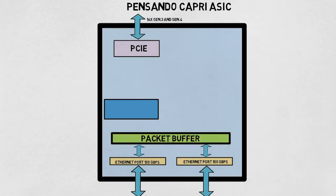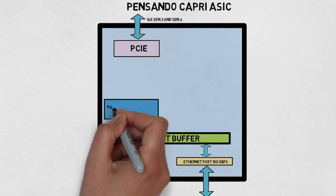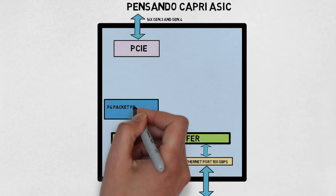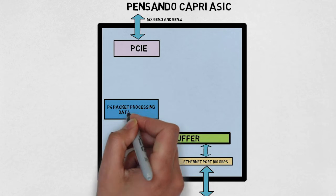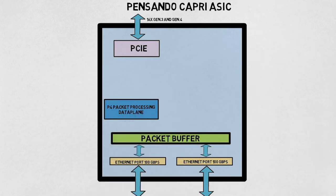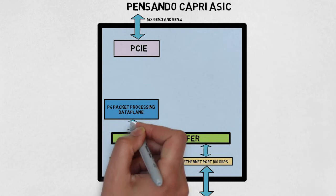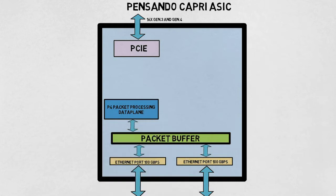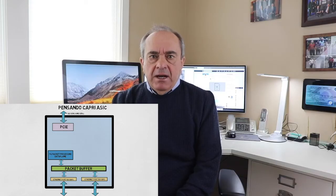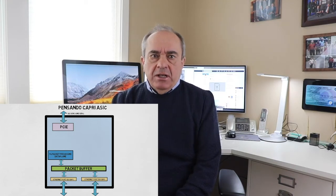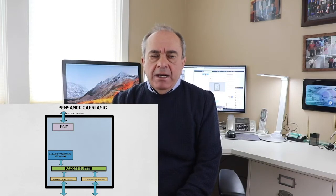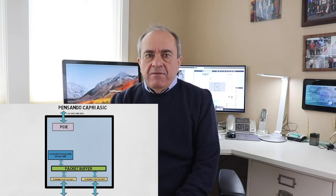The primary data plane processing feature of the Capri ESIC is the P4 packet processing data plane. The P4 data plane is composed of a pipeline of processors that are fully programmable using the P4 standard. This architecture guarantees that the ASIC is capable of processing 100 Gigabit per second of data plane traffic, while at the same time implementing a lot of functions like stateful firewall, microsegmentation, load balancing, encryption, NVMe, etc.